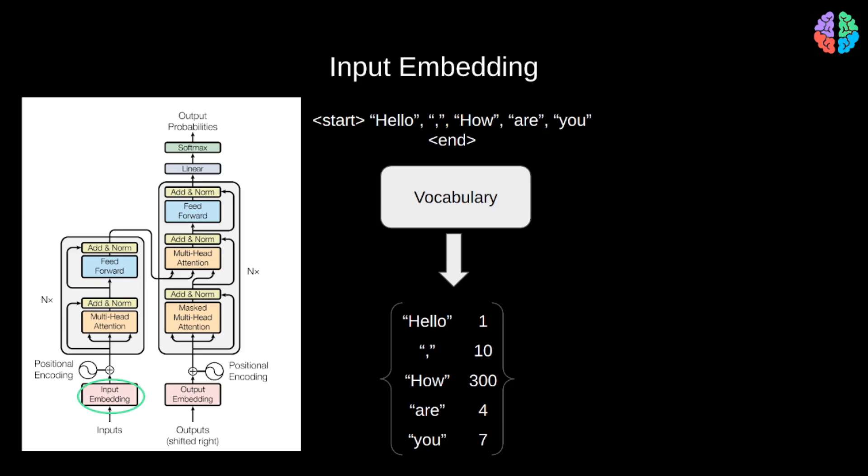However, there's still a problem. These indices can get really big in no time. Just imagine working with the entire text from the Wikipedia pages. So, as a standard practice in machine learning, the solution is to normalize this data to be between 0 and 1. However, given the massive number of words in a language, working with just one number per word will firstly keep us in lower dimensions and secondly will reduce the representative power massively.